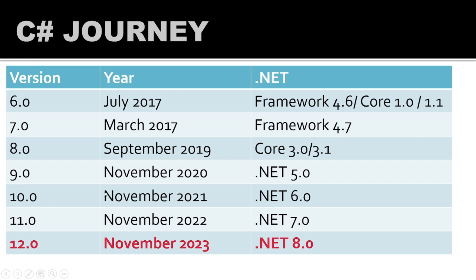C# 9.0 came with .NET 5.0 in 2020, version 10.0 in 2021 with .NET 6.0. The latest version at the time this video was recorded is C# 12.0, which came in November 2023 running on .NET 8.0.